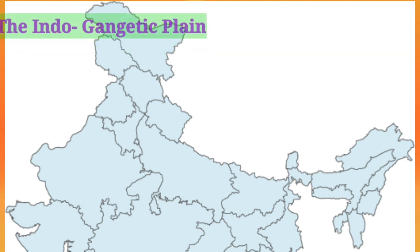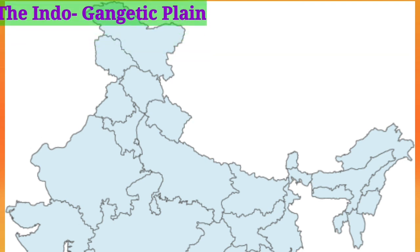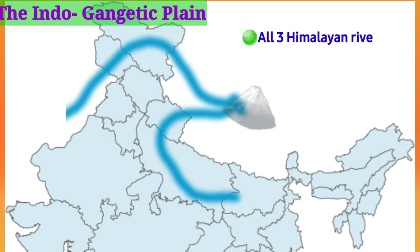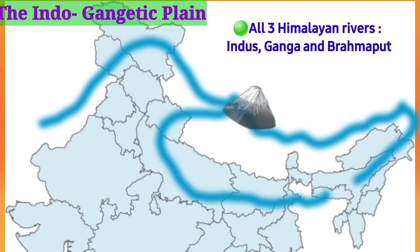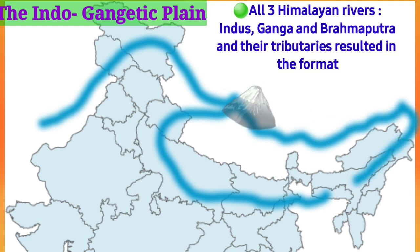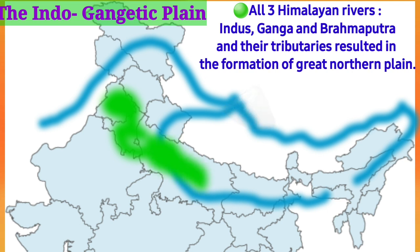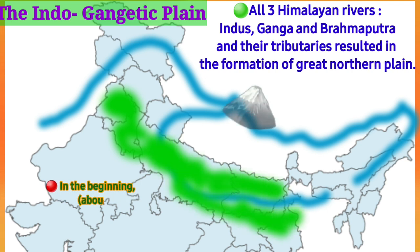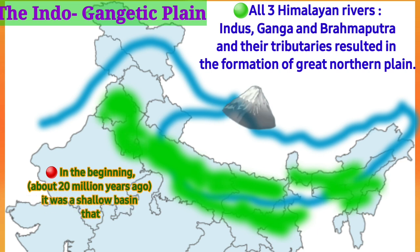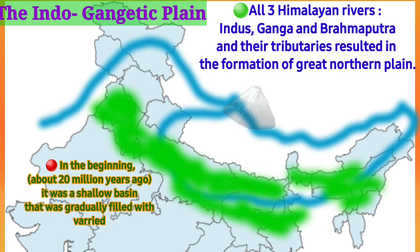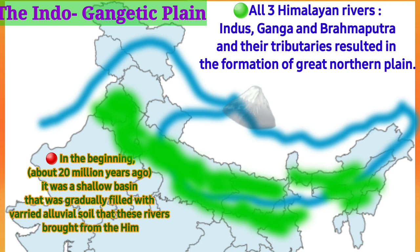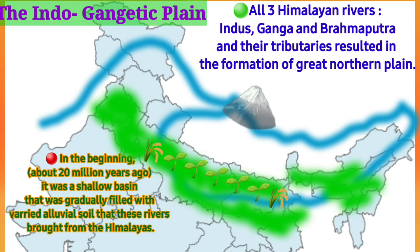Let us see how the Indo-Gangetic Plain was formed. Himalayan rivers like Indus, Ganga, and Brahmaputra, along with their tributaries, resulted in the formation of the Great Northern Plains. About 20 million years ago, the Indo-Gangetic Plain was a shallow basin. As the Himalayan rivers flowed through this area, they brought alluvial soil and filled this shallow basin, forming the Indo-Gangetic Plain.